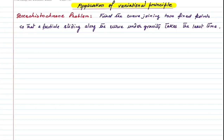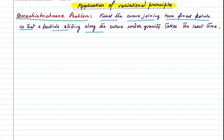Hello friends, today we are going to solve the Brachistochrone problem. The question is: find the curve joining two fixed points so that a particle sliding along the curve under gravity takes the least (minimum) time.